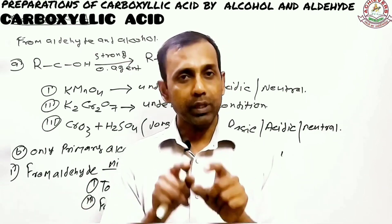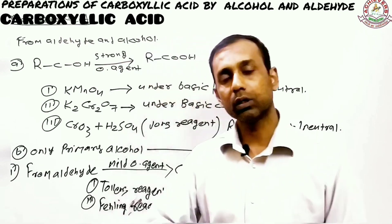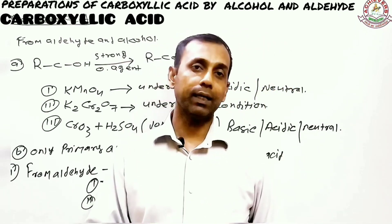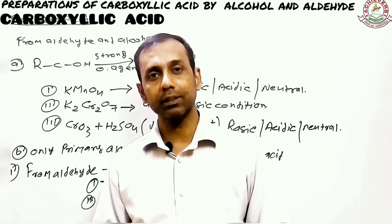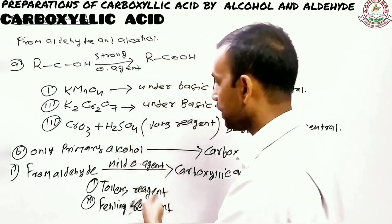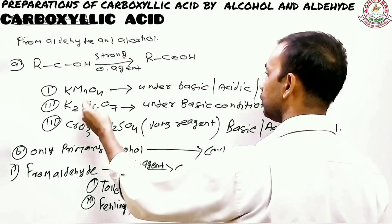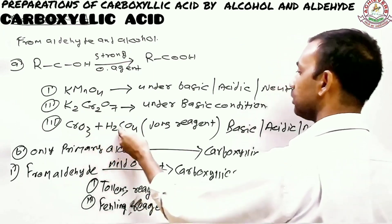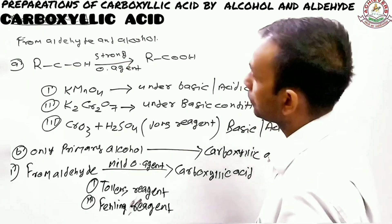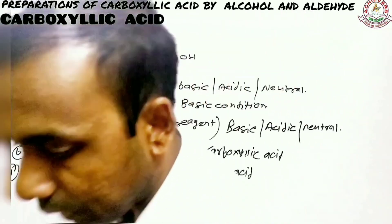So we have two options here: primary alcohol and aldehyde. A primary alcohol converts into carboxylic acid when you use a strong oxidizing agent, but an aldehyde can convert into carboxylic acid if you use a mild oxidizing agent. The mild oxidizing agents are Tollens and Fehling; the strong ones are KMnO4, K2Cr2O7, and CrO3 with sulfuric acid. Now let me take you through some examples.